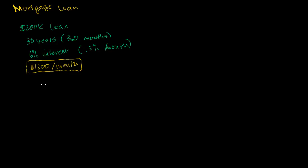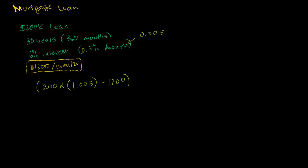On day 0, you have a $200,000 loan. You don't pay any mortgage payments yet — your first payment is a month from today. So this amount is compounded by 0.5%, which as a decimal is 0.005. In a month, with interest, it will have grown to 200,000 times 1.005. Then you pay $1,200, so minus $1,200. For the next month, whatever is left over is compounded again by 0.005, and then you pay another $1,200.